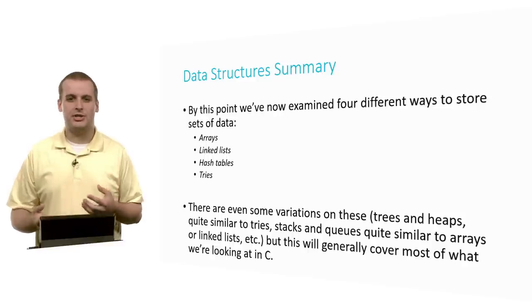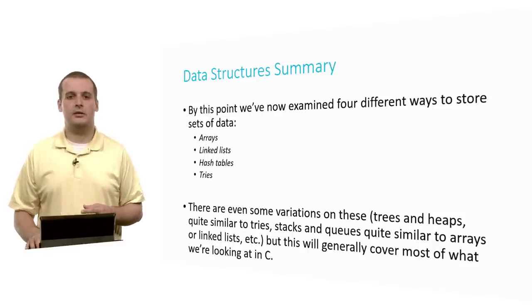In CS50 we've covered a lot of different data structures — arrays, linked lists, hash tables, tries, stacks and queues. We'll also learn a little bit about trees and heaps. But really, these all end up being variations on a theme. There are four basic ideas that everything else can boil down to: arrays, linked lists, hash tables, and tries. And this is pretty much going to summarize everything we talk about in this class in terms of C.